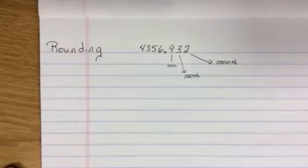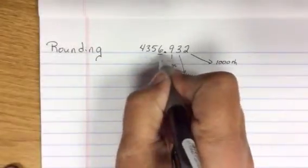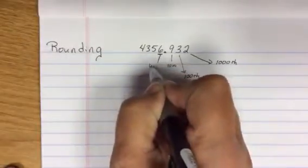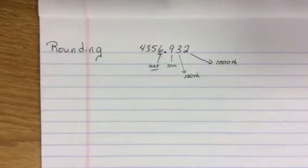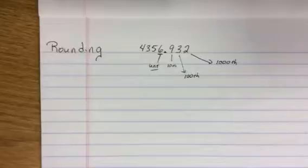If we say round to the nearest unit, we're talking right here. Some have maybe heard this referred to as rounding to the nearest whole, meaning no fractional part.